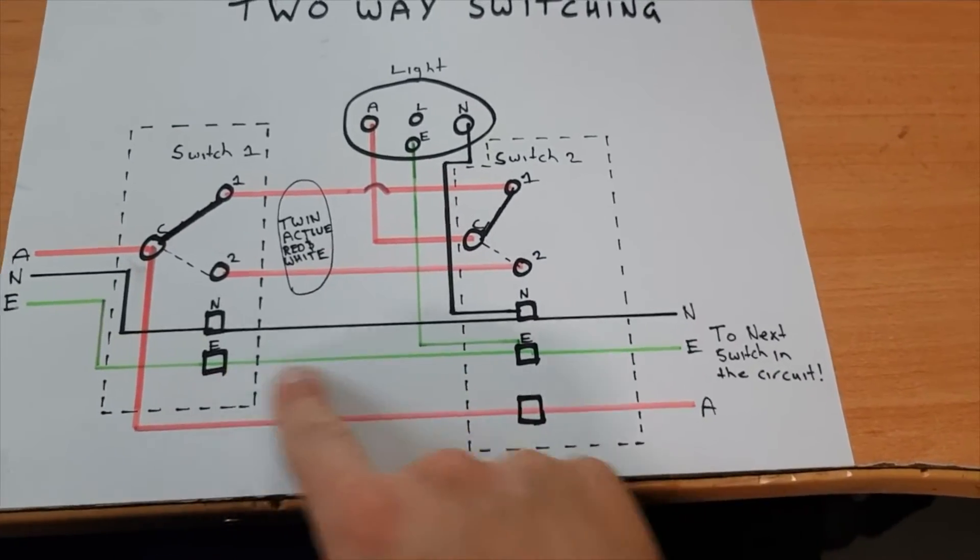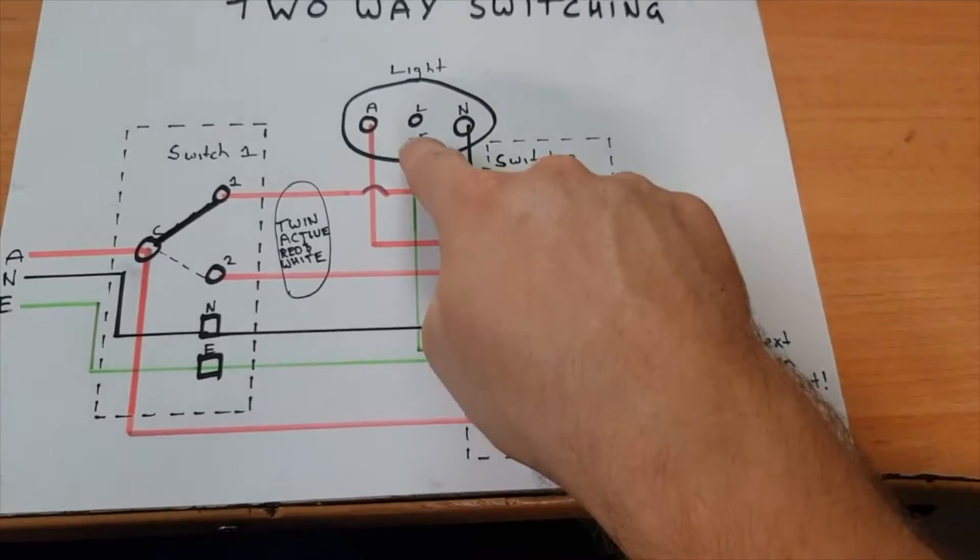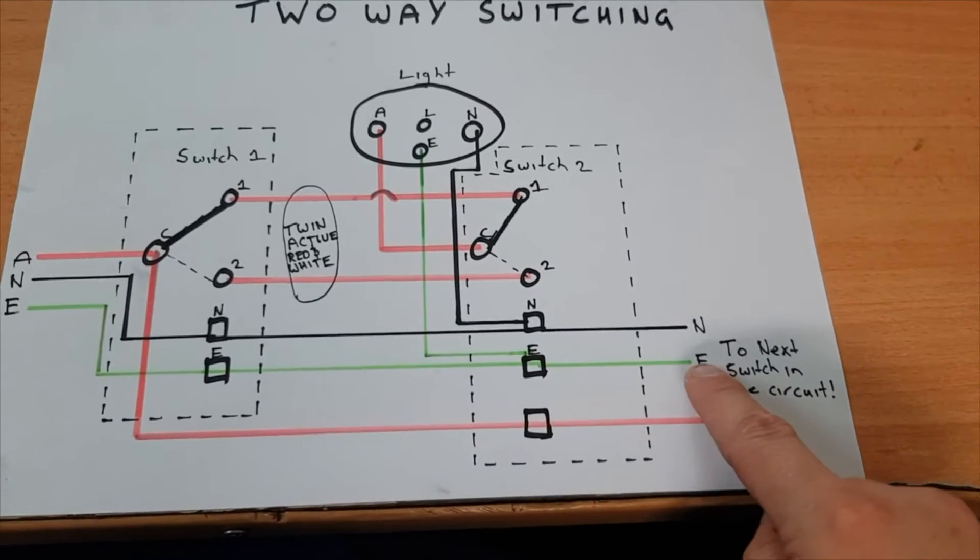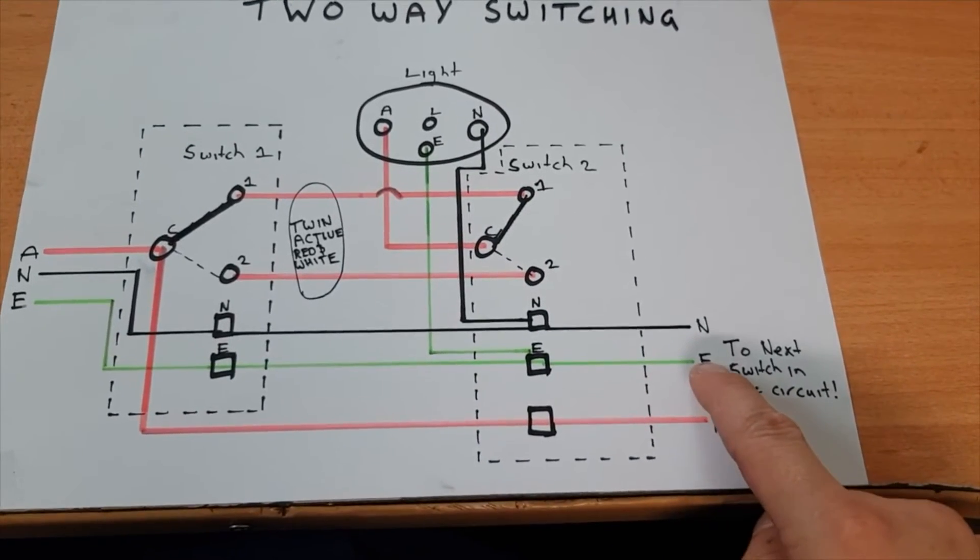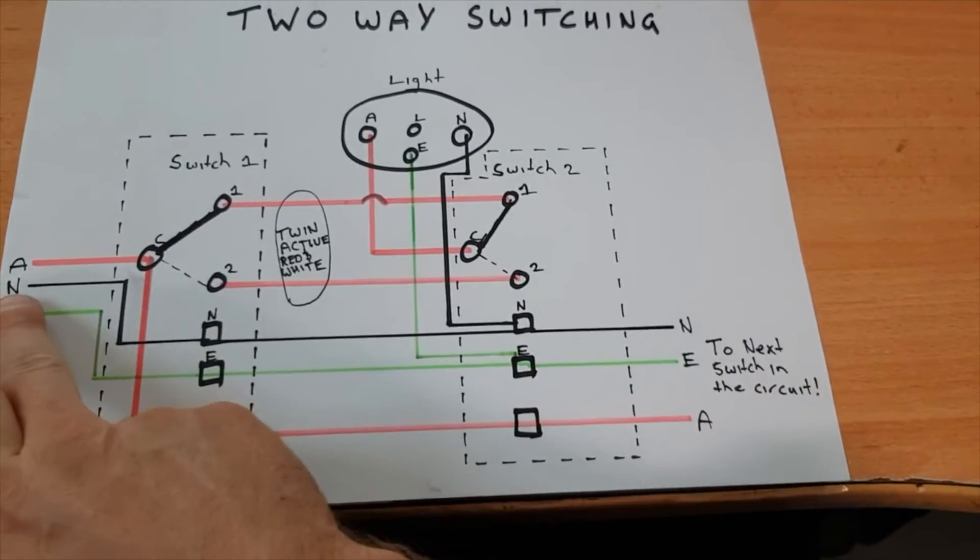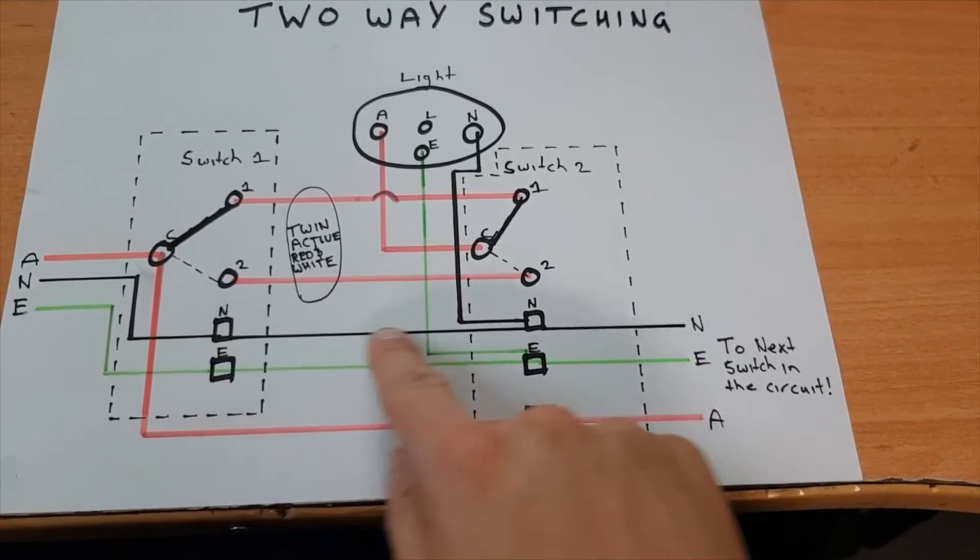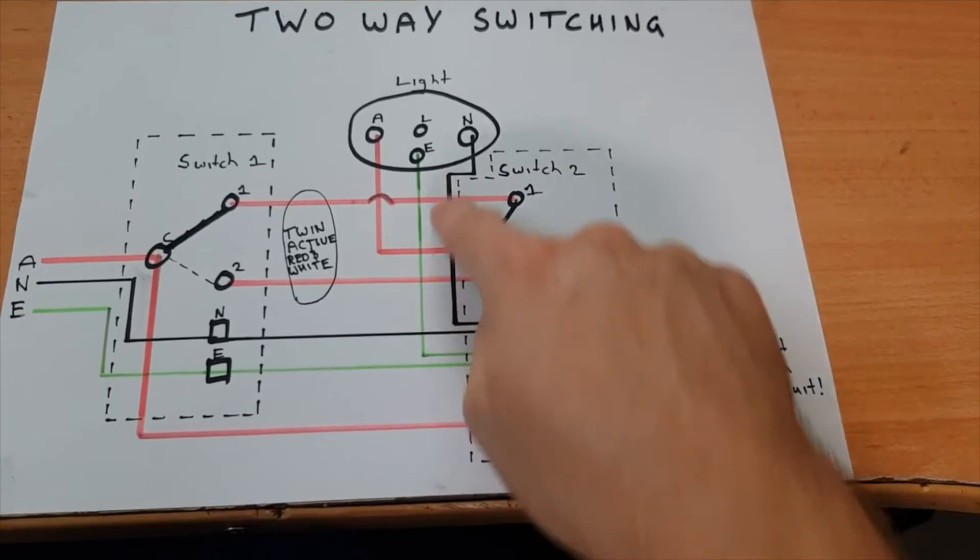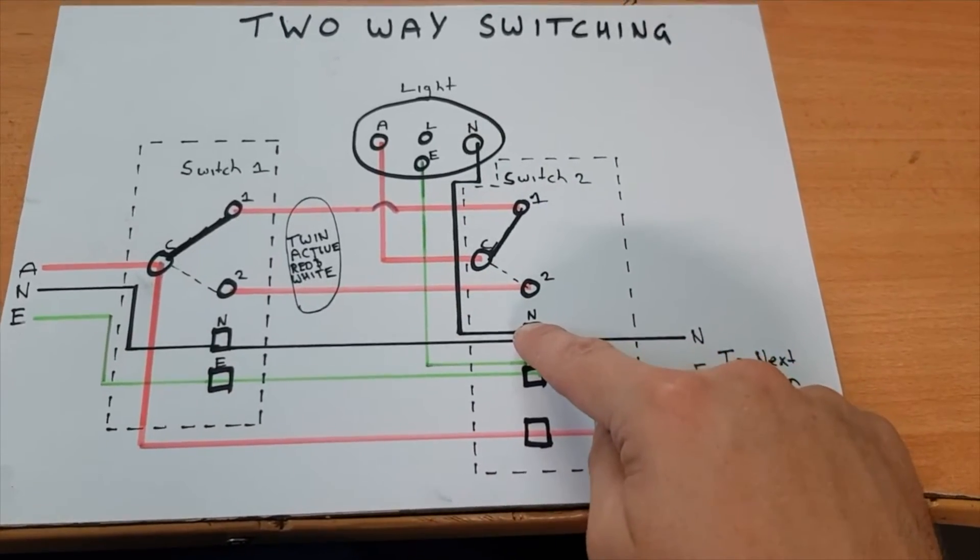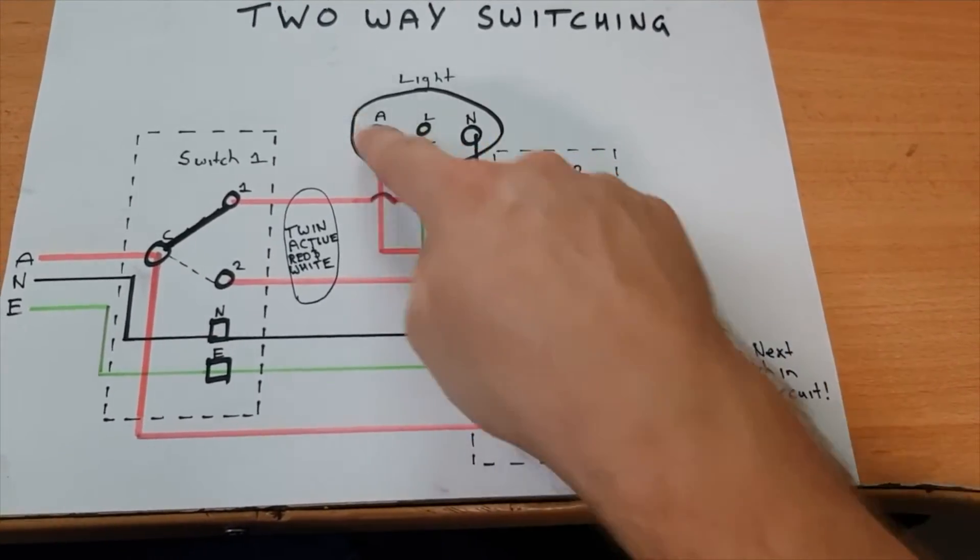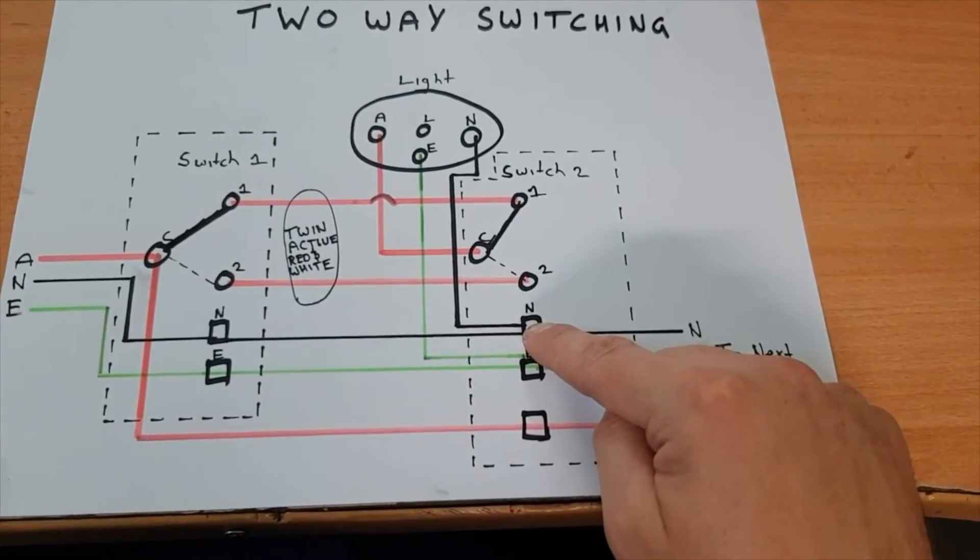Your neutral is exactly the same here. Loops at this switch, loops at this switch, up to the light here. Normally the cable that comes from your switch to your light, your neutral would also come from there too, in the same position here.